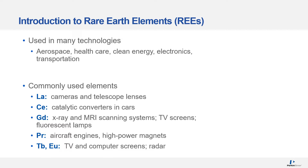Commonly used elements are lanthanum in cameras and telescope lenses, cerium in catalytic converters in cars, gadolinium for X-ray MRI scanners, TV screens and fluorescent lamps, praseodymium for aircraft engines and high powered magnets, and terbium and europium in TV and computer screens and radars.